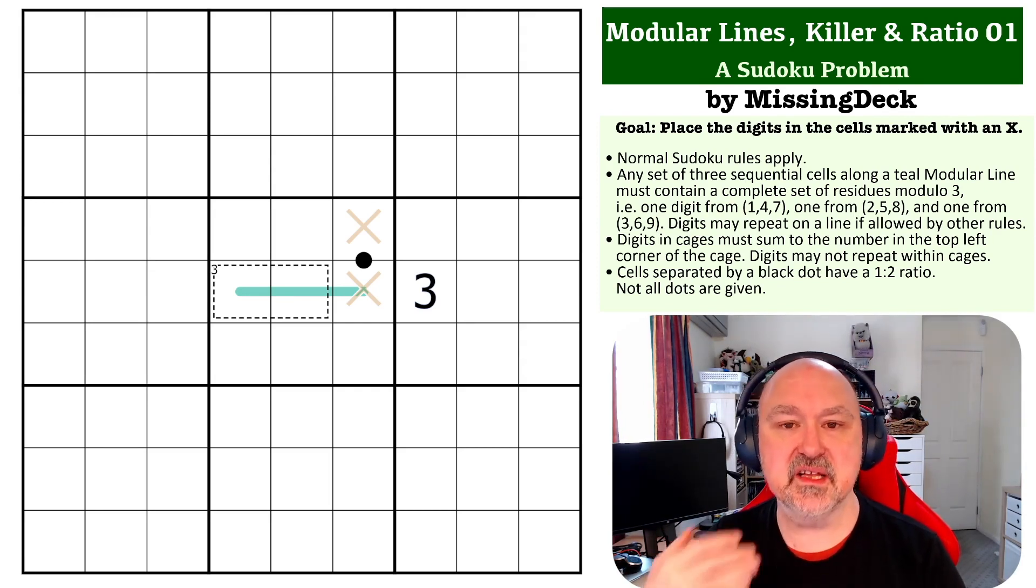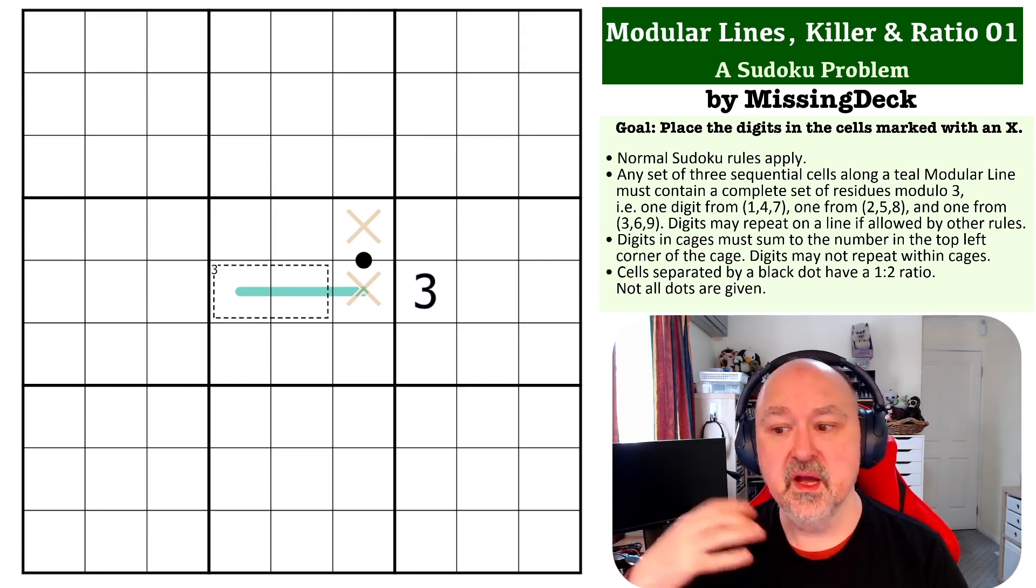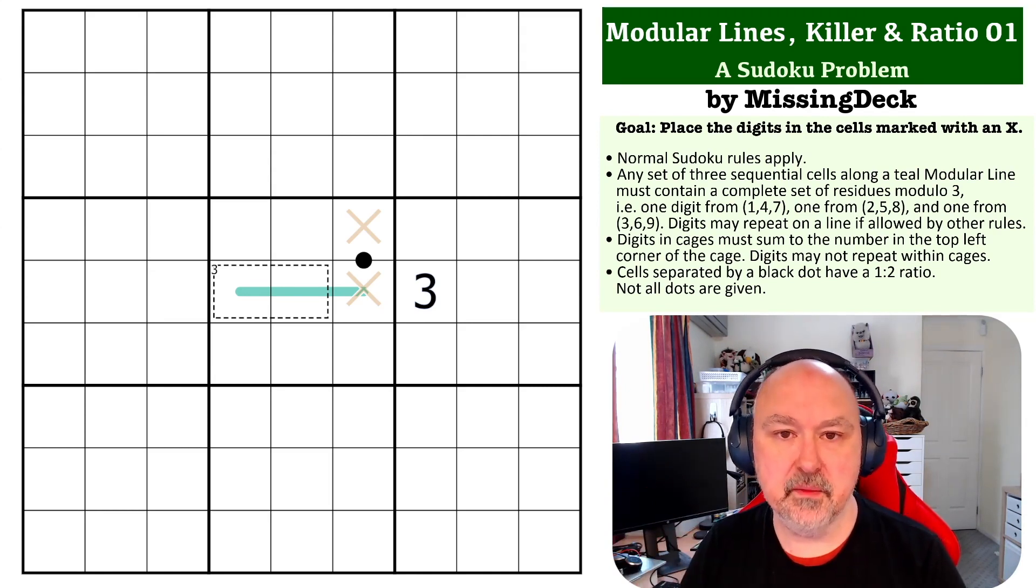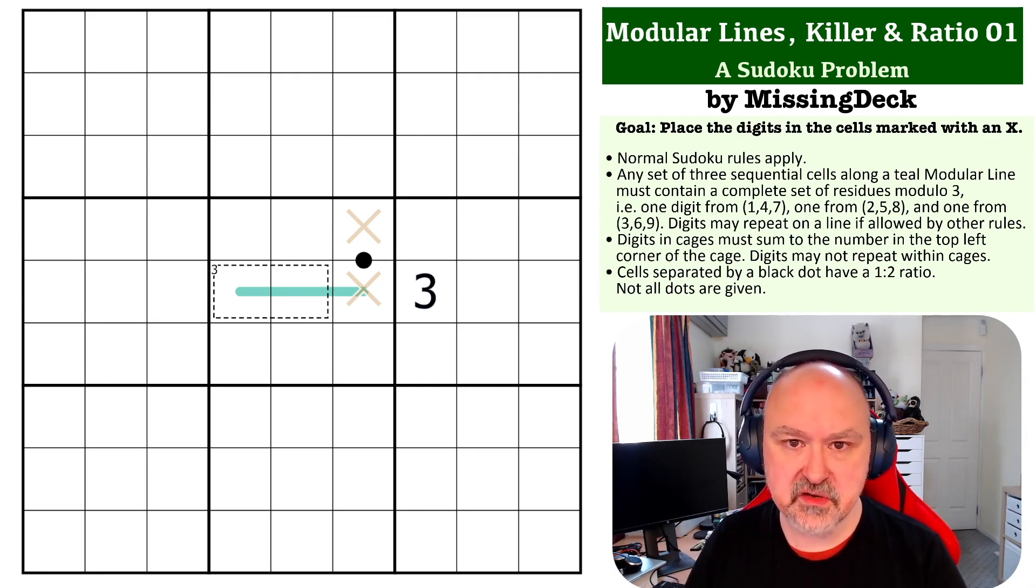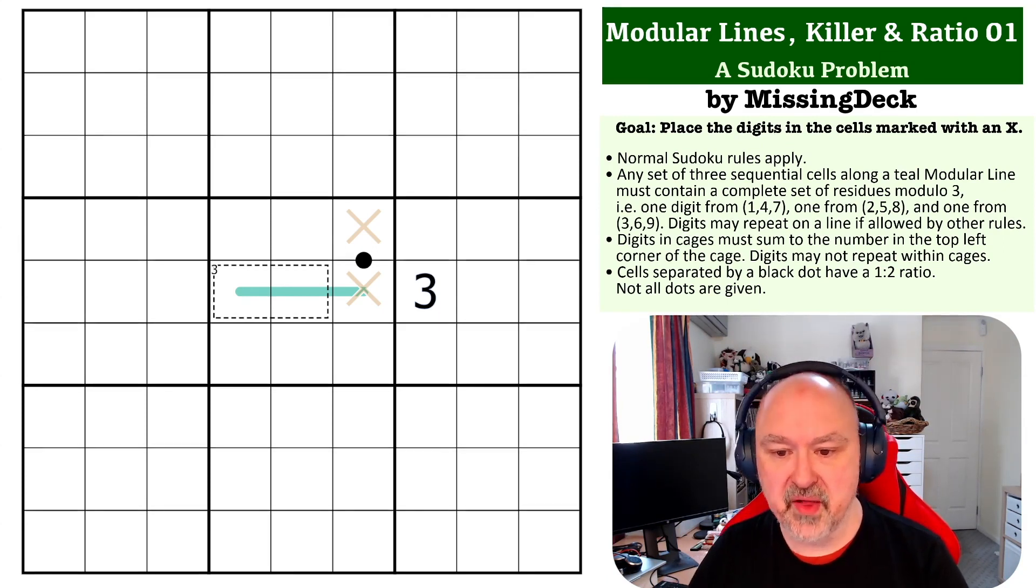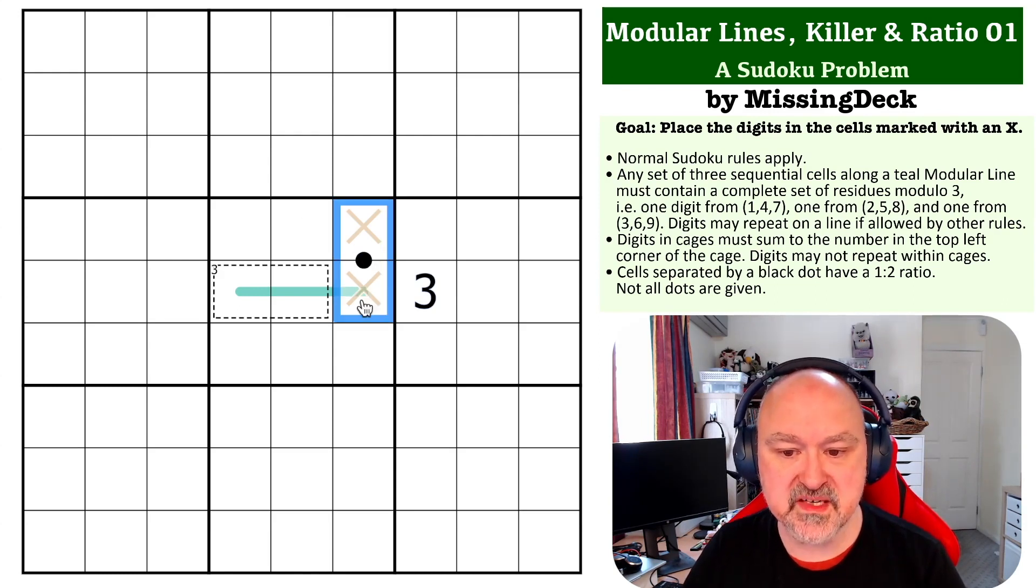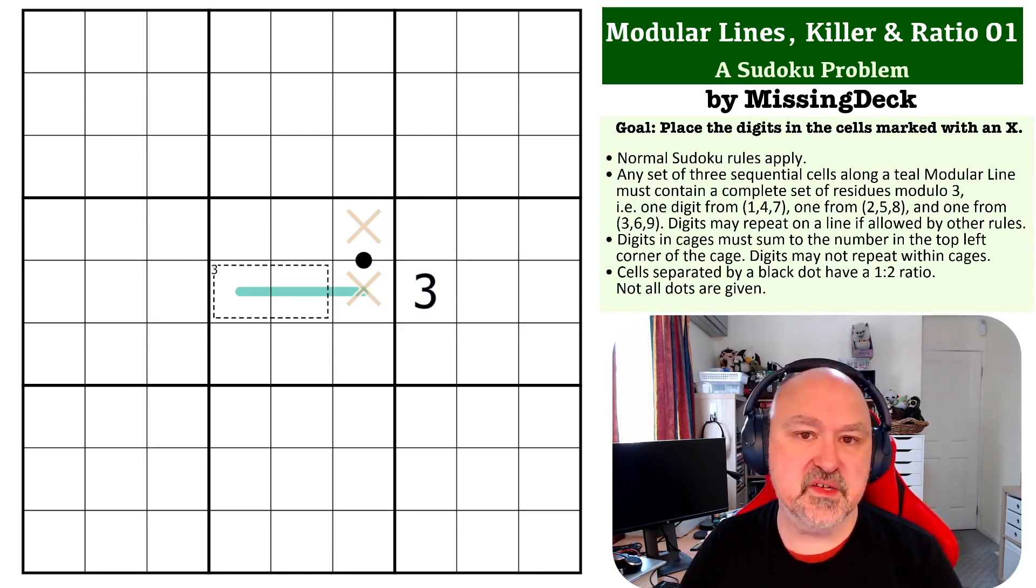That's basically the sets of digits where if you divide by three, they have different remainders. 3-6-9 have a remainder of 0, 2-5-8 have a remainder of 2, and 1-4-7 have a remainder of 1. The digits on the black dot—one must be double the other. That's what you've got for this problem.